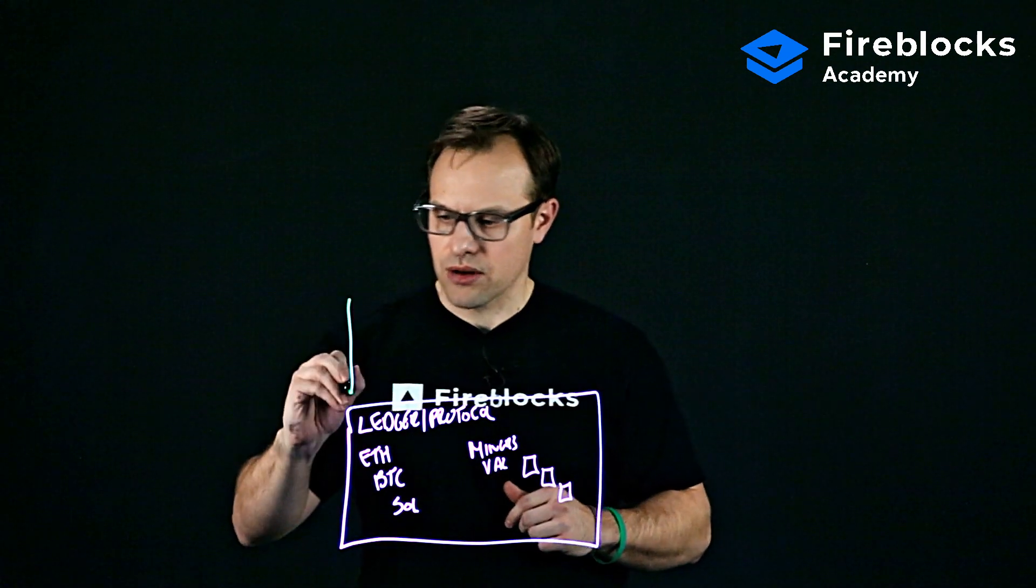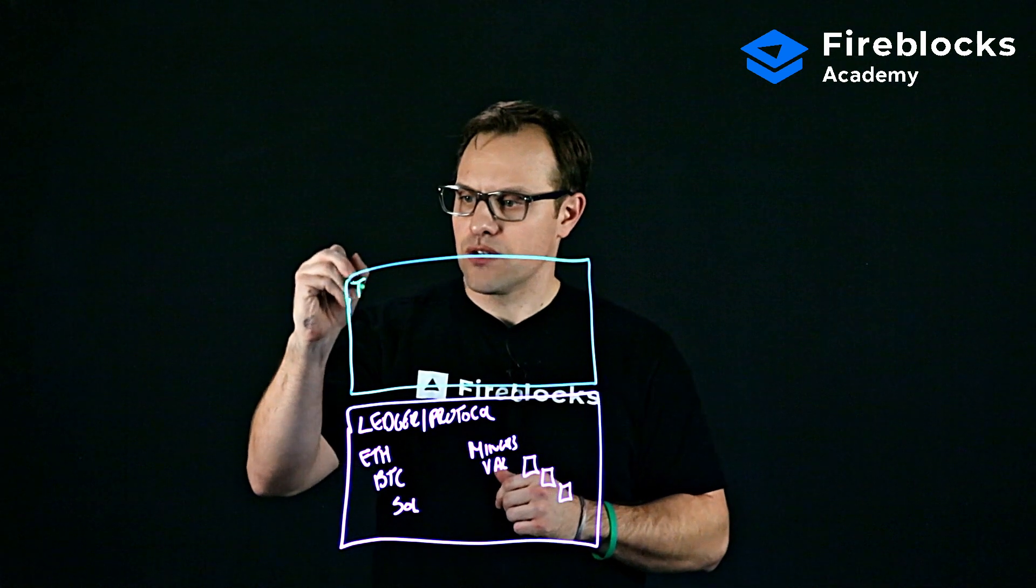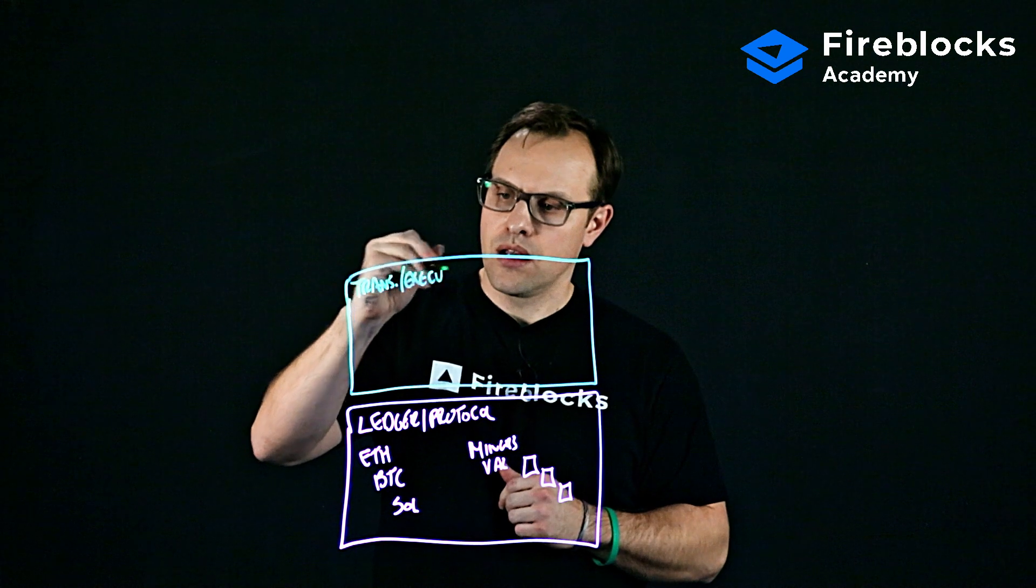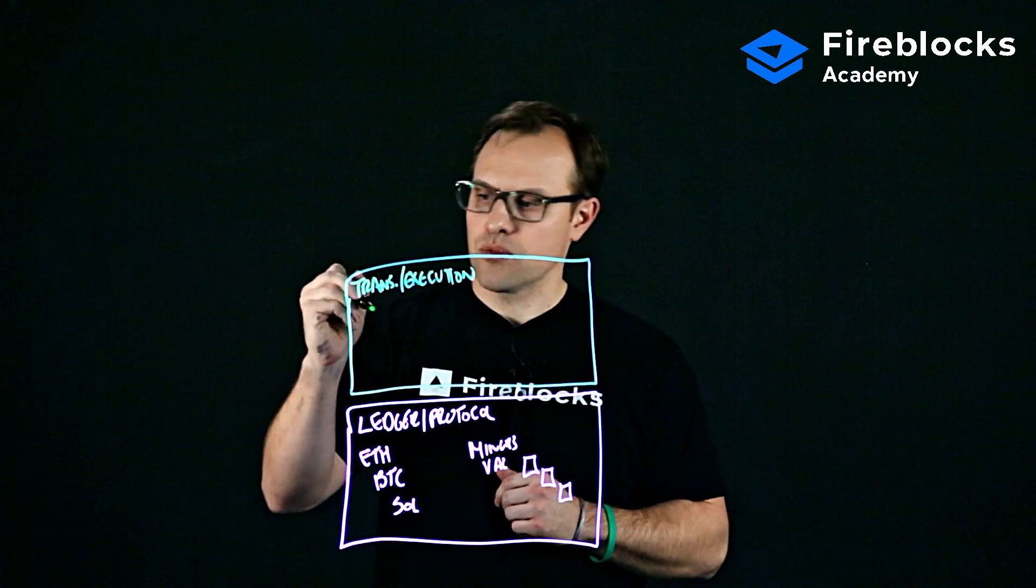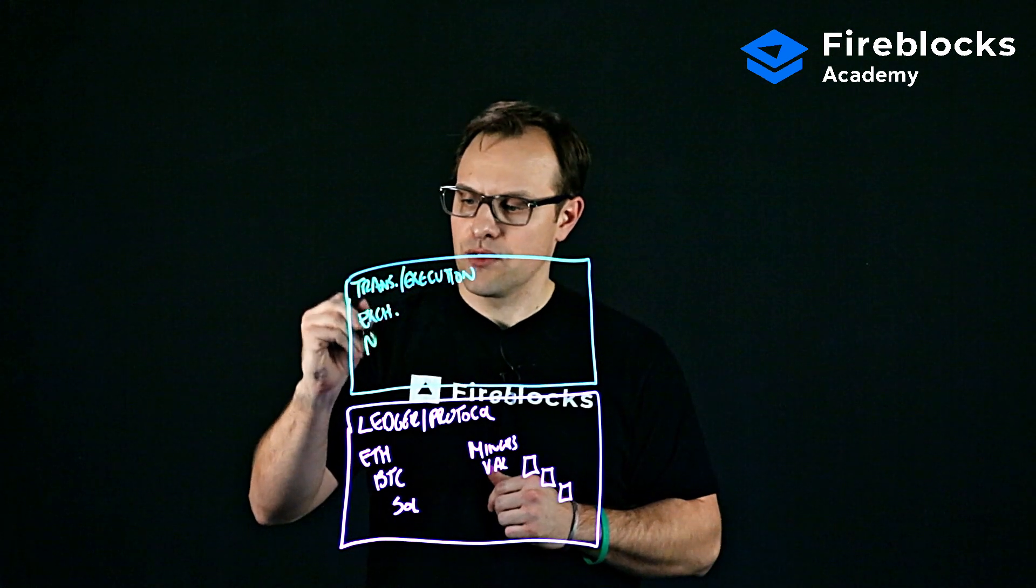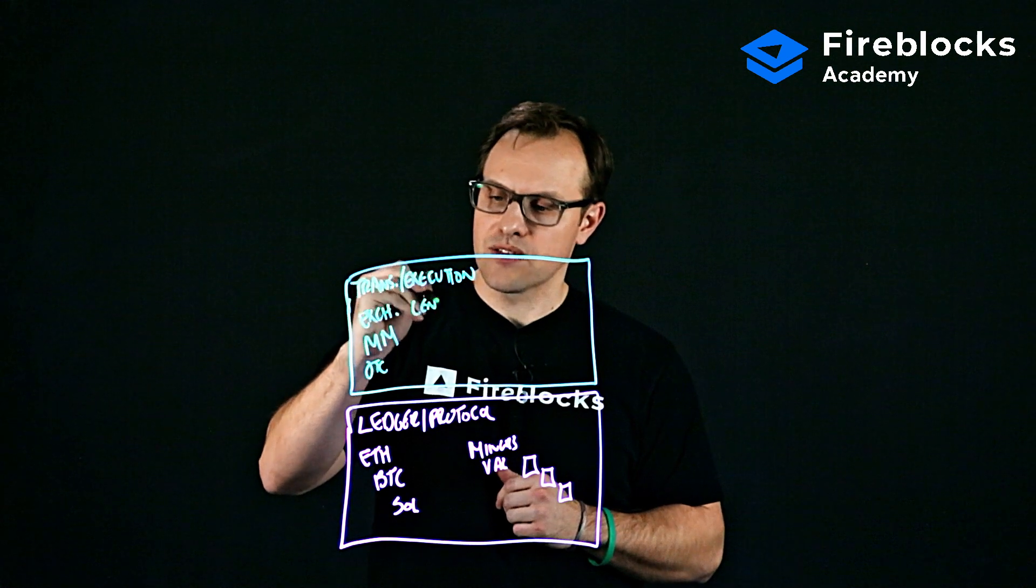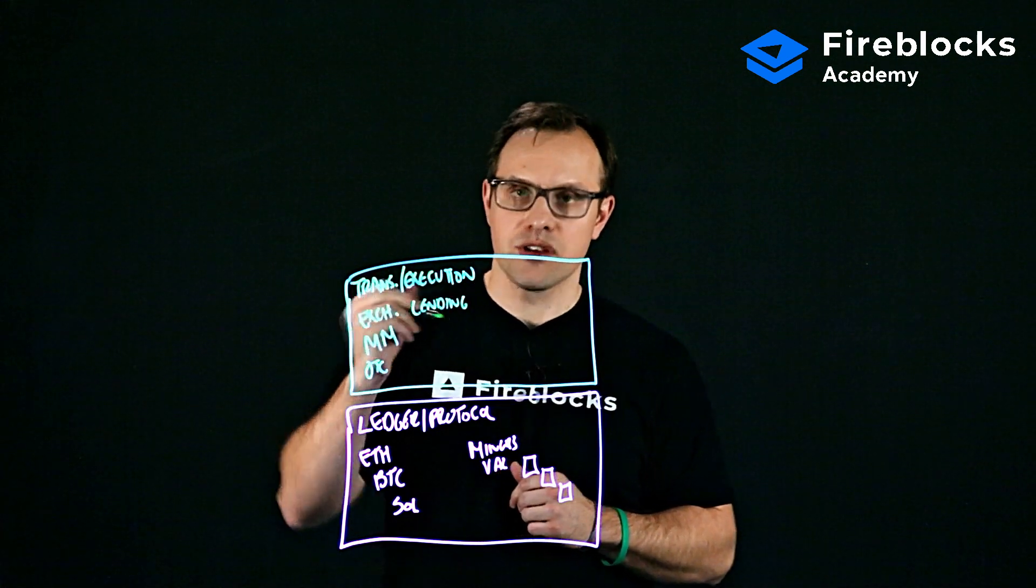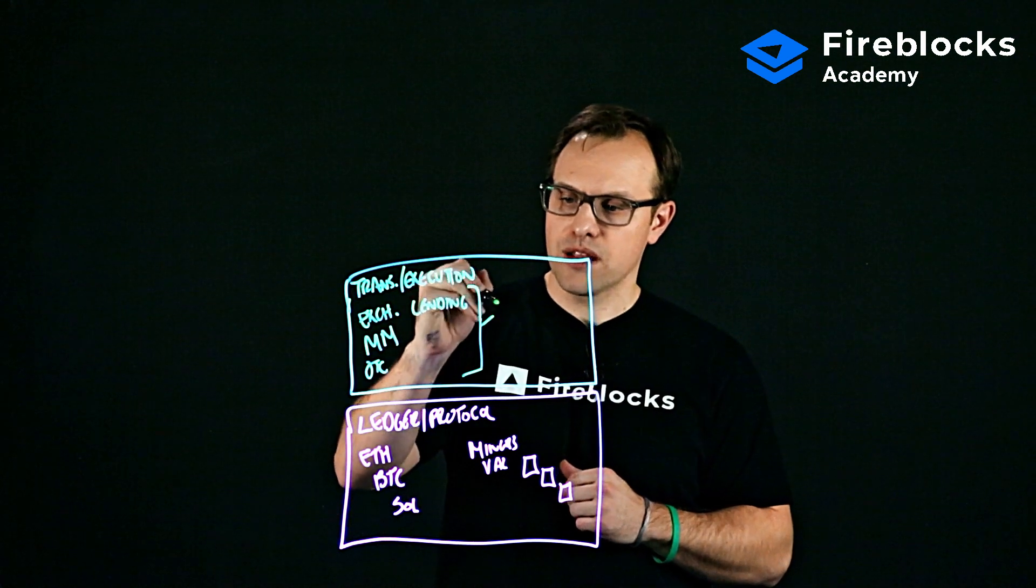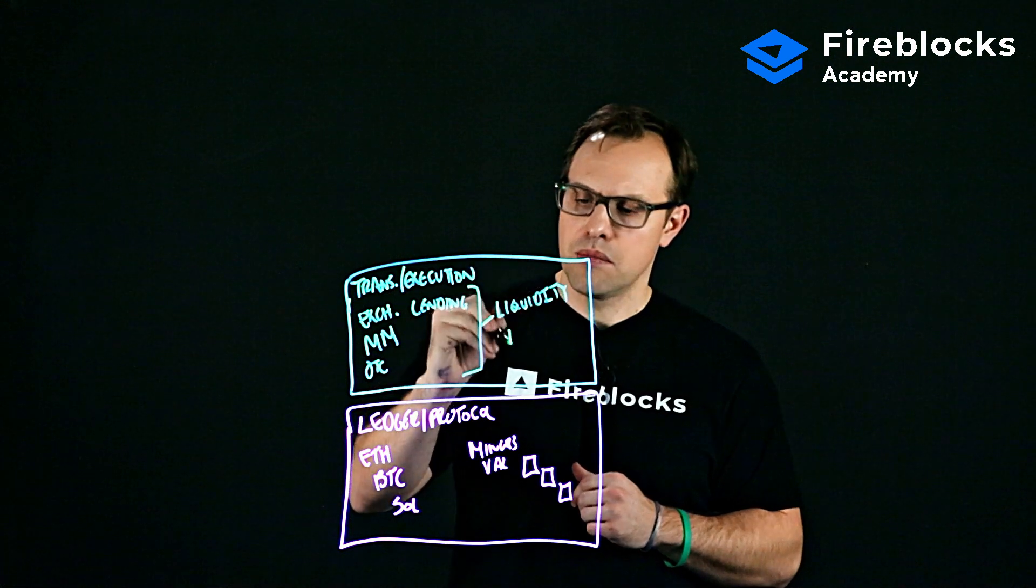The next group or categorization, we can call the transaction or execution layer. And this is where we'll have people that are exchanges, we'll have market makers, we will have OTC desks, we'll have lending desks. But the basic function here is to actually help facilitate trading. And you could think of them as liquidity makers.